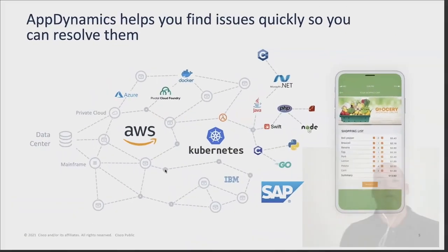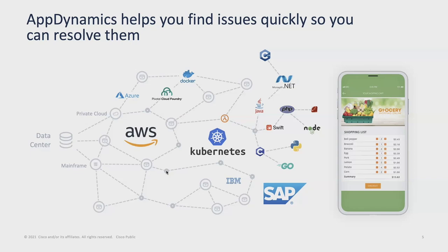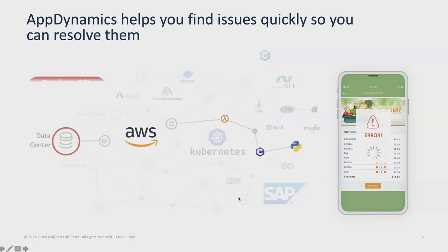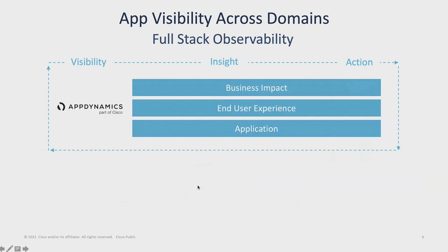AppDynamics was born and built to help application people reduce the mean time to resolution of an issue. Given that complexity, if you have an application issue — say you open a ticket with your bank because you can't make a transfer or payment — people are going to try to find out who's to blame. AppDynamics helps application people quickly diagnose the source of the problem. We traverse that complexity and tell you, for example, the error is due to a database SQL change. We started in the APM space — application performance management — but our biggest differentiator is the ability to take that application deep dive and elevate the abstraction towards user experience and business impact.